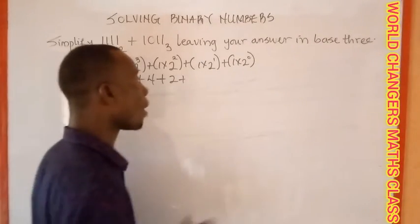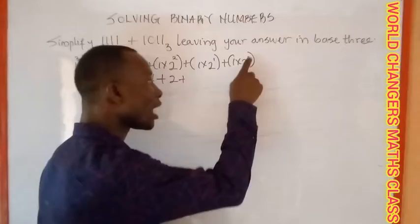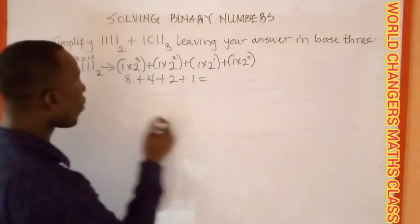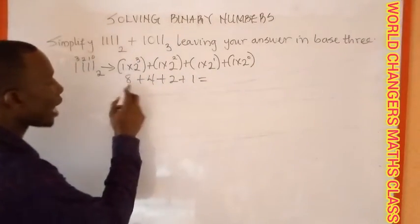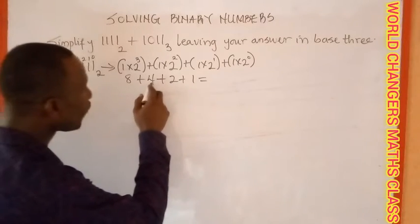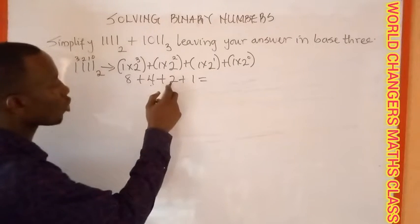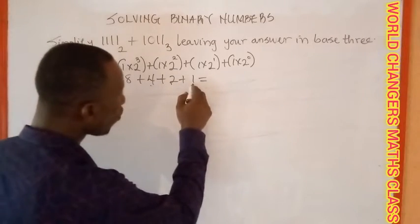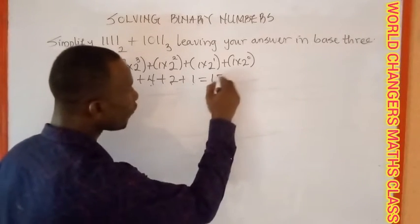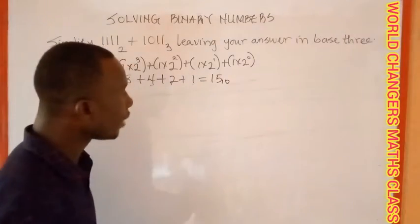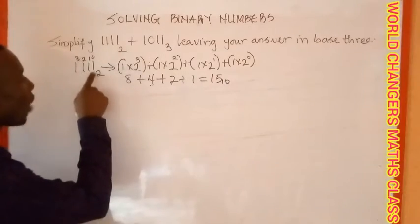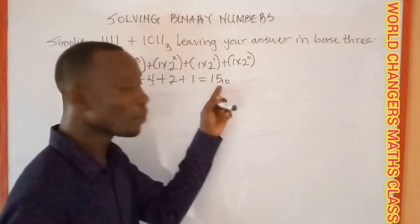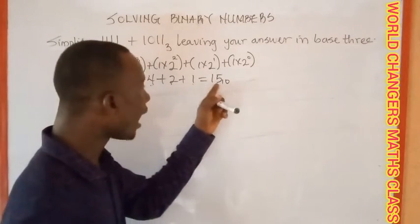And don't forget, any number raised to power zero is one, so one multiplied by one gives me one. Now eight plus four gives me twelve, twelve plus two gives me fourteen, and fourteen plus one gives me fifteen. So 1111 base two is equivalent to fifteen base ten.